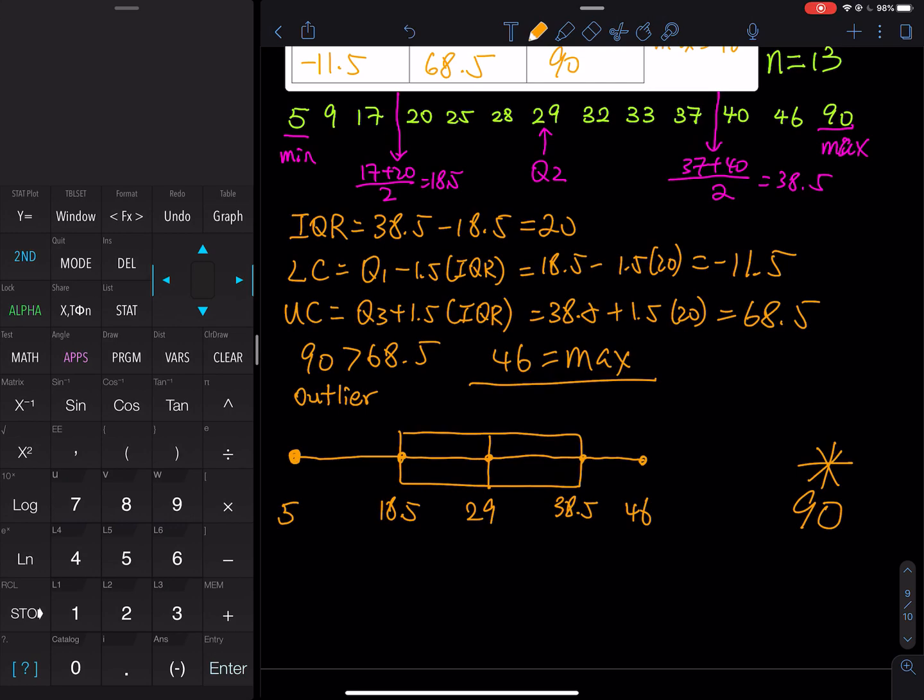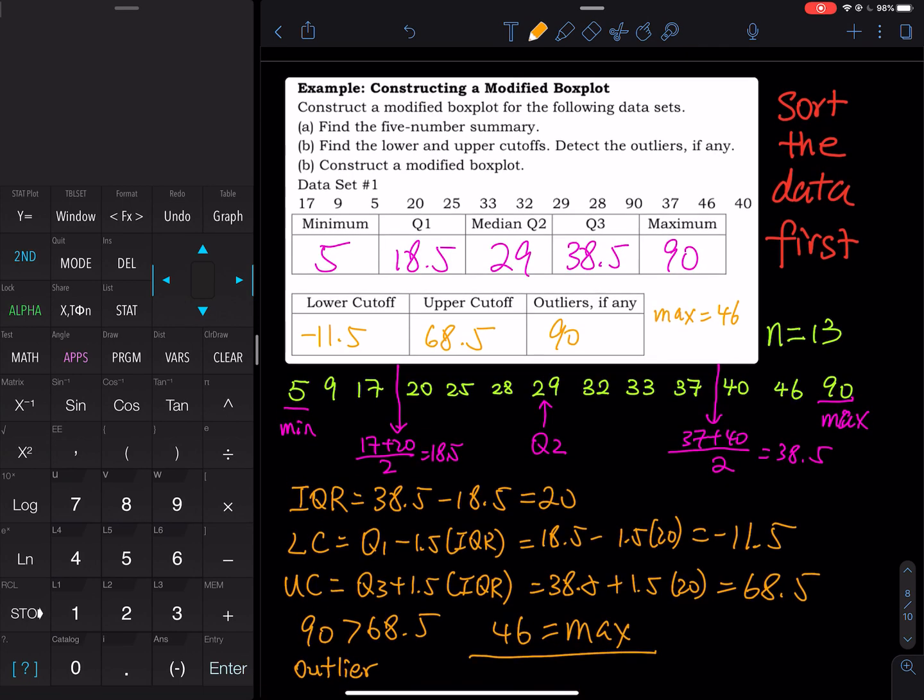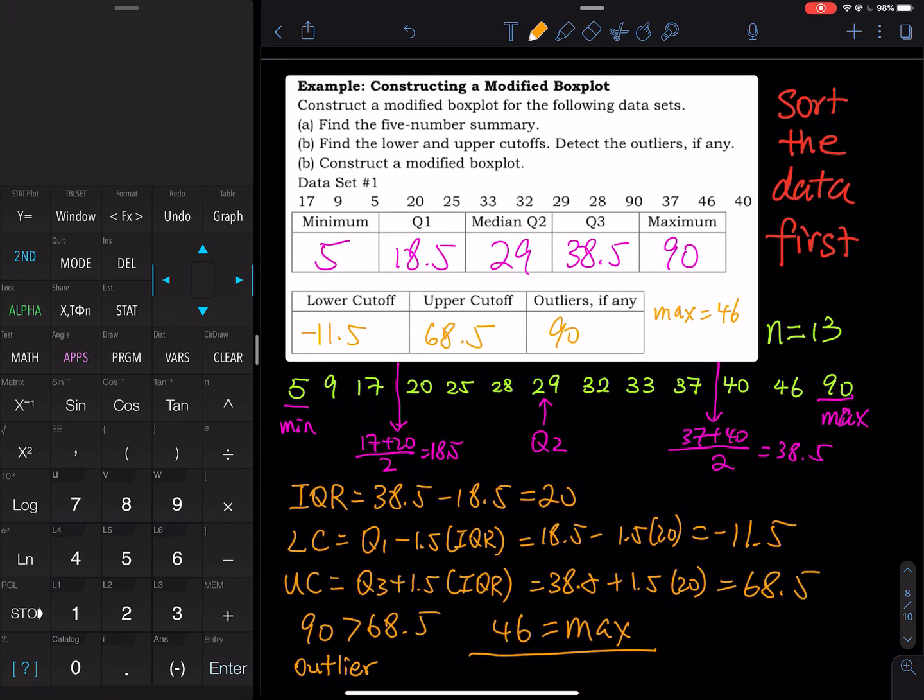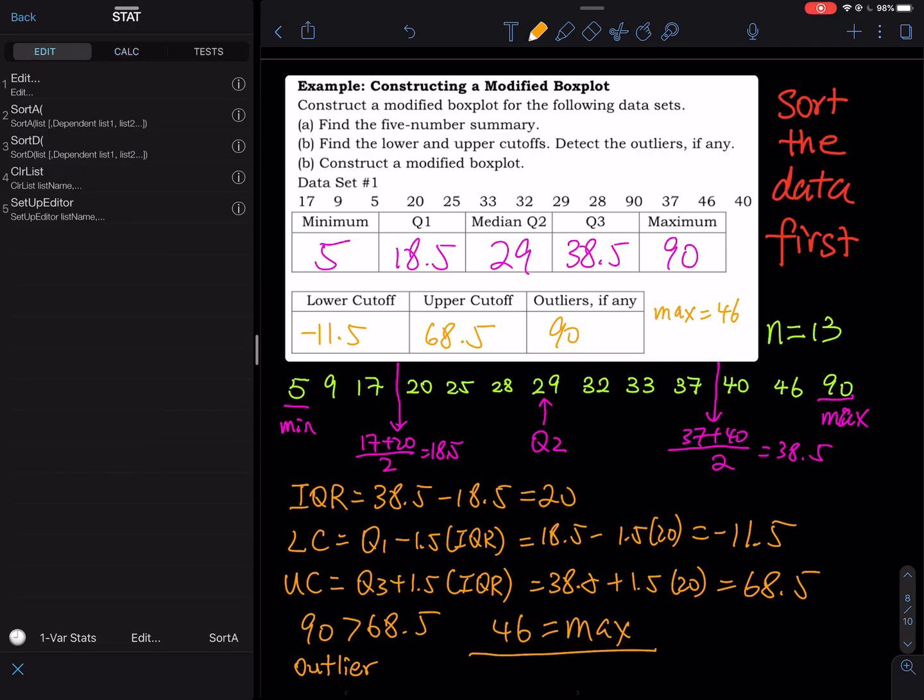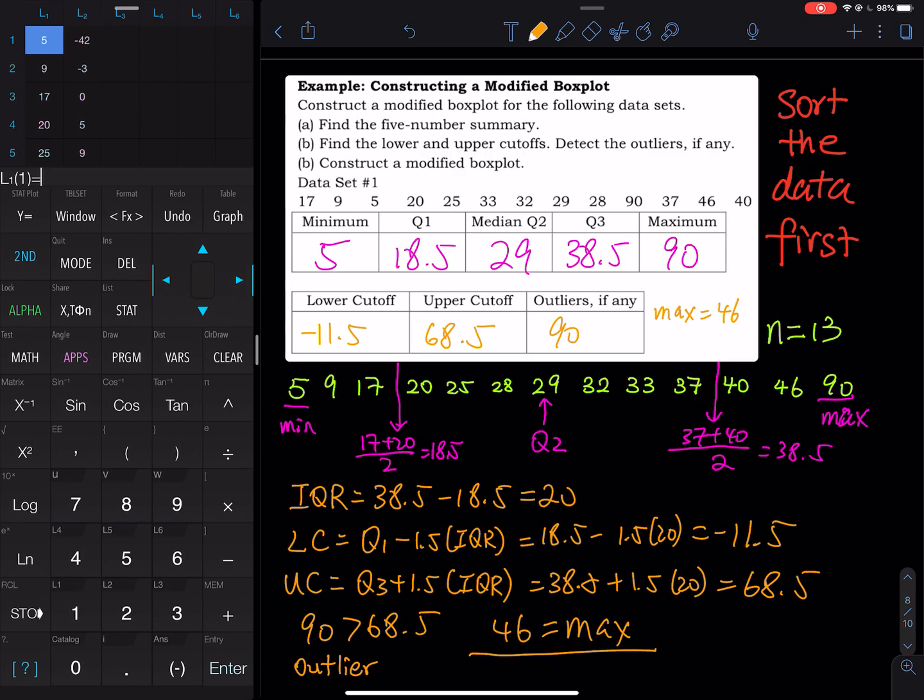And then how do you do this using a calculator? So using a calculator, first we enter the data. So we go to STAT, and then we go to edit. And then my data is already in L1 because I use this data set to do a regular boxplot. So I don't need to do this again.